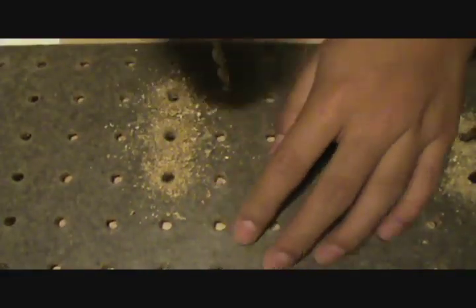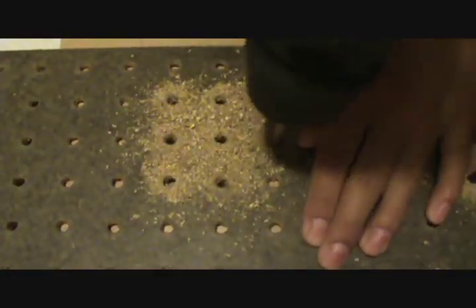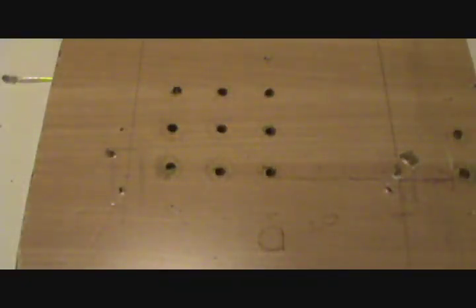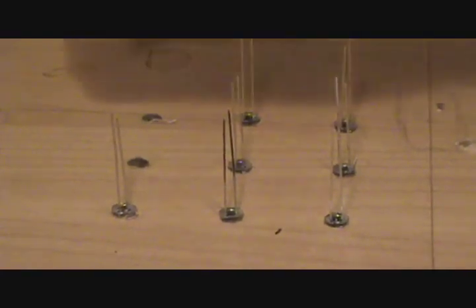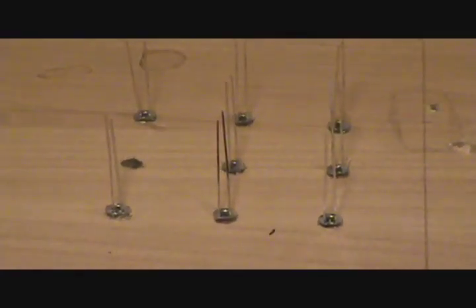Okay, to make soldering easier, I made a jig by putting some pegboard on some scrap wood and drilling nine holes. Now, when we put the LEDs in, they fit pretty snug, just like so.